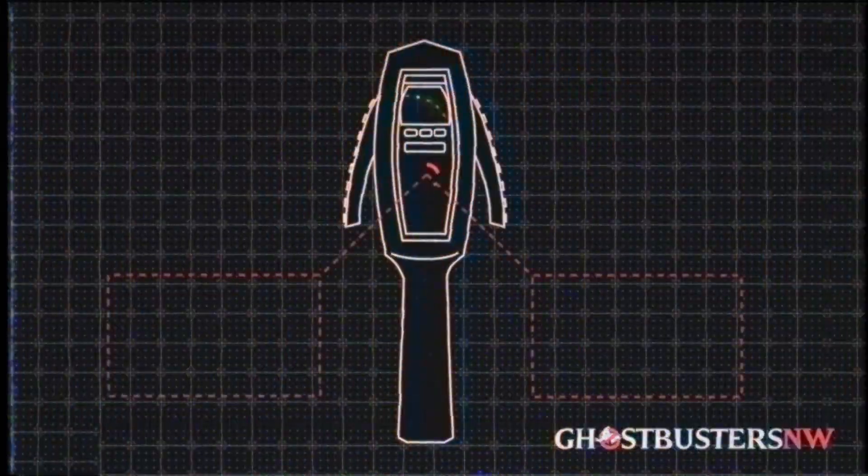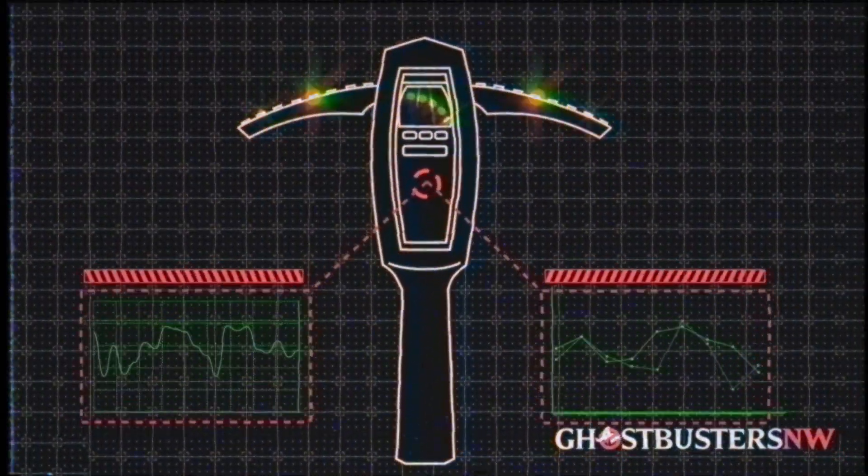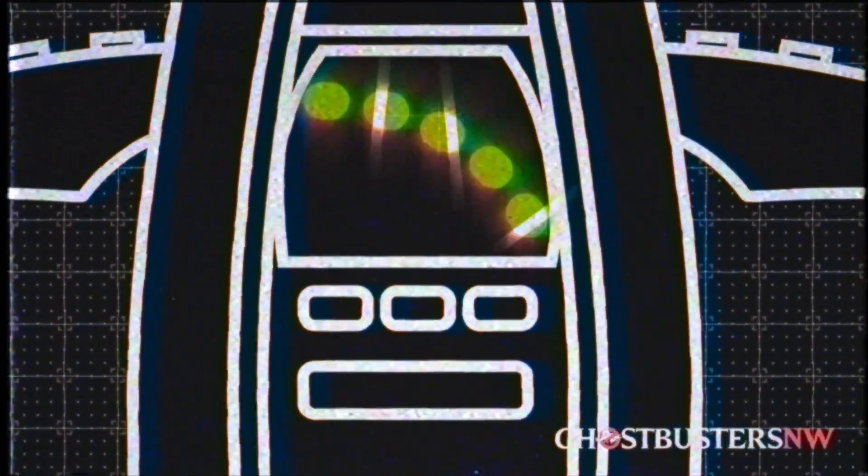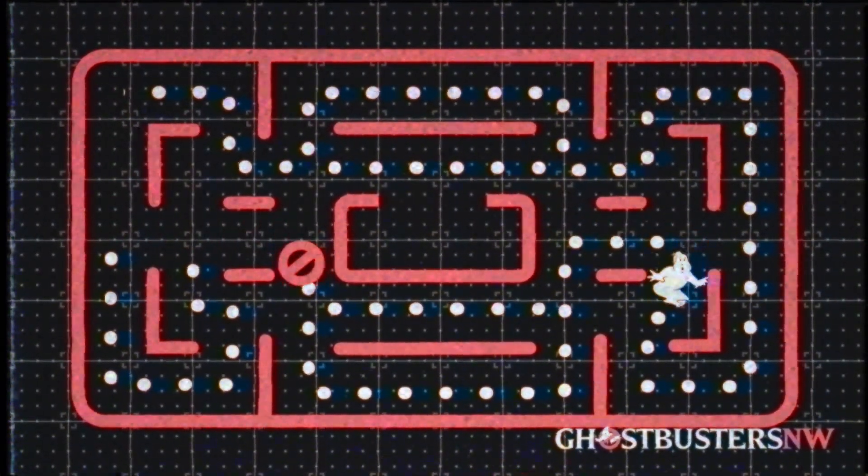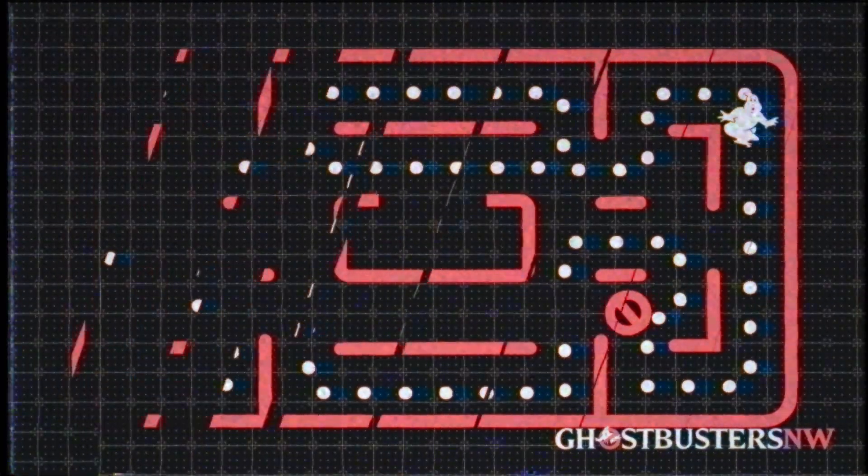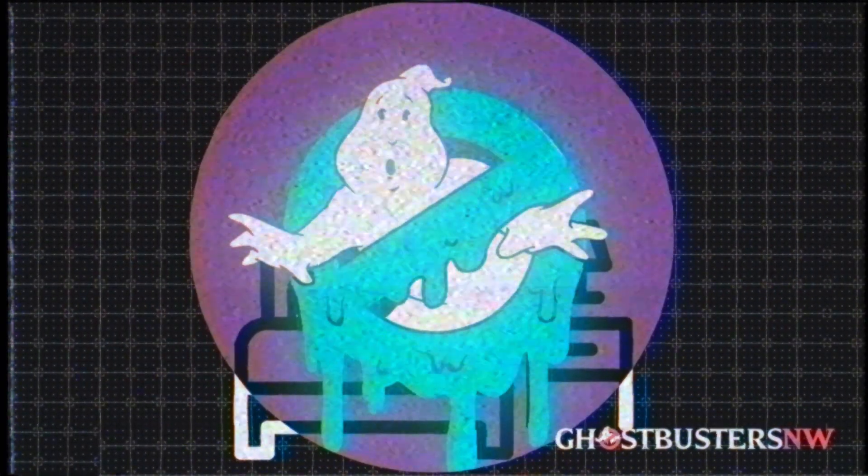The PKE meter measures these negatively charged ions and free neutron flux, allowing a Ghostbuster to track a ghost that has recently materialized like breadcrumbs from beyond the grave, or a black light in the sleazy motel room of the afterlife.